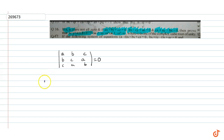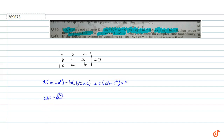This expands to: a(bc - a²) - b(b² - ac) + c(ab - c²) = 0. That is abc - a³ - b³ + abc + abc - c³ = 0. That is a³ + b³ + c³ - 3abc = 0.